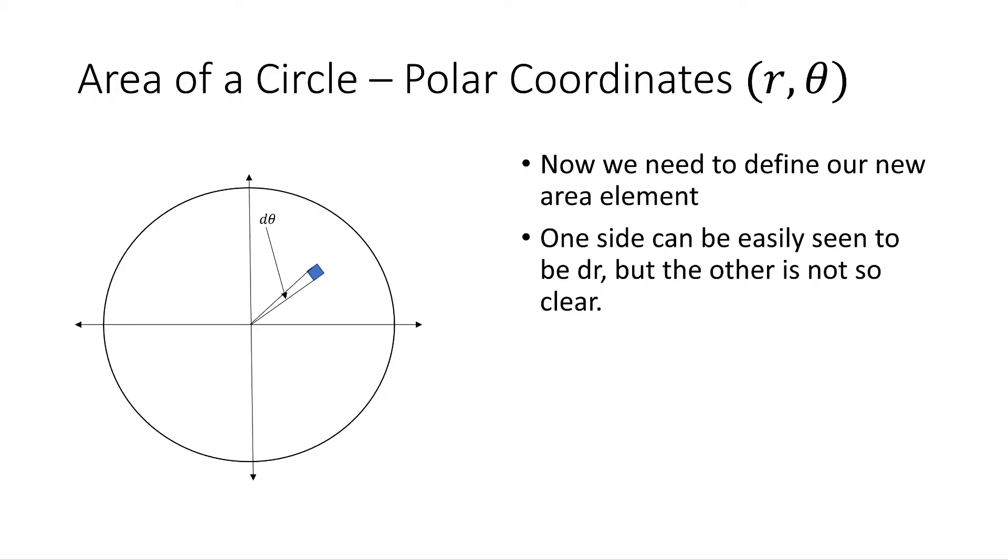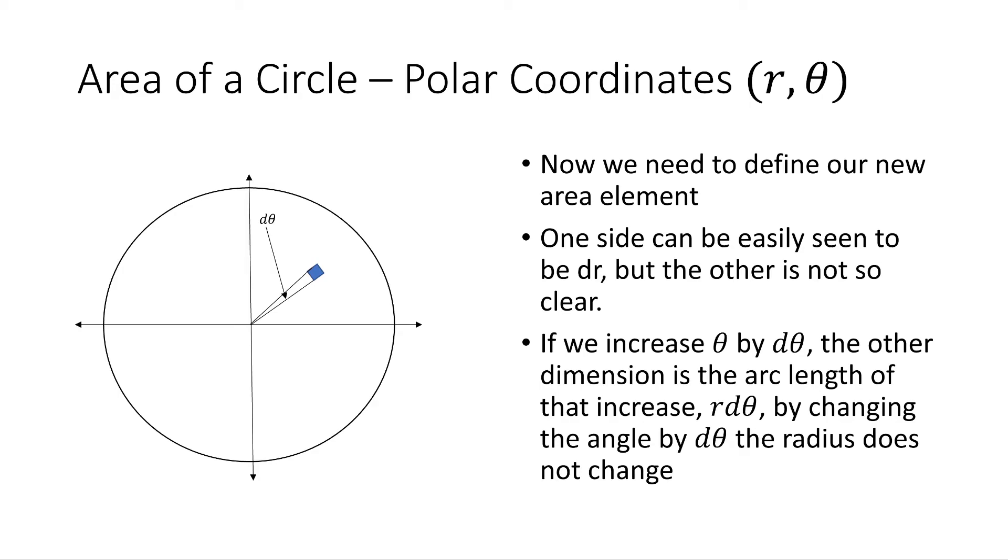So it's easy that you can imagine that one side is dr. If we move r out a little bit more, we have that tiny change in r. And one side of that square should be dr. But what is the other? So if we increase theta by some d theta, the other dimension ends up being the arc length between those two angles. And by changing the angle d theta, the radius does not change. But it's not changing because we're not going any farther out.